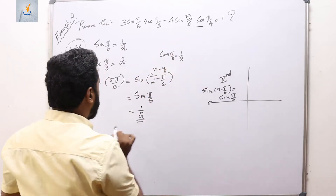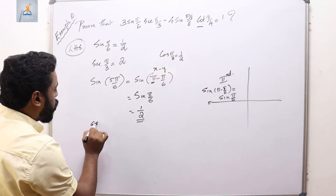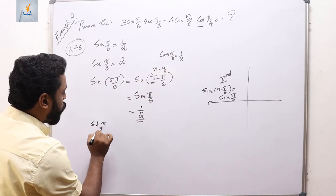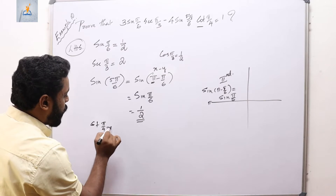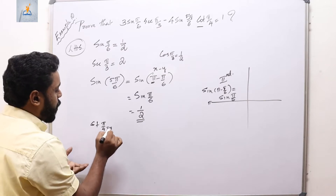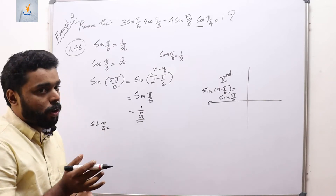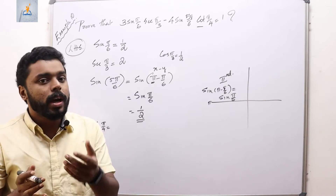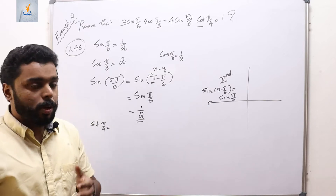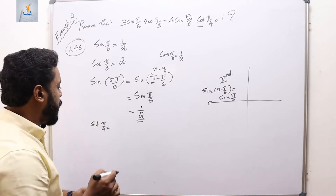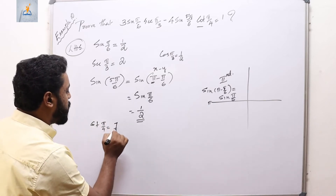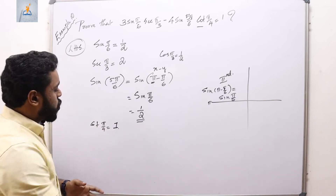cot(π/4): since tan(π/4) = 1 (because sin(π/4) = 1/√2 and cos(π/4) = 1/√2, their ratio is 1), cot(π/4) = 1.